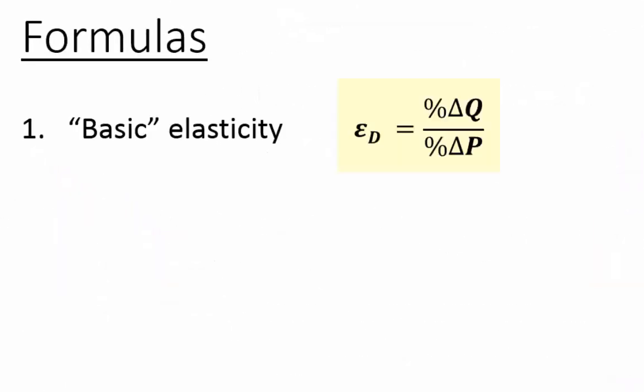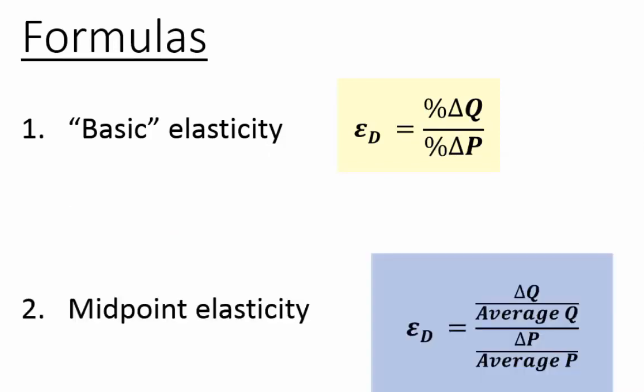So just to summarize the formulas, our basic elasticity of demand is simply the percent change in quantity divided by the percent change in price. Our midpoint elasticity is the change in quantity divided by the average quantity, divided by the change in price, divided by the average price. Likewise with supply, same exact calculations except on the supply curve. So when we're calculating the elasticity of supply, we're just looking at the percent change in quantity supplied, divided by the average quantity supplied, percent change in price, divided by the average price.